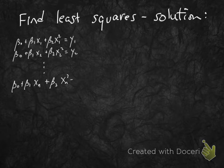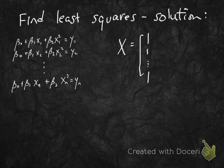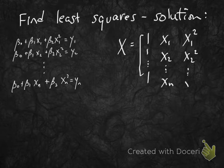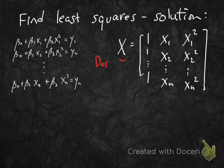Here's our ideal linear system again. The coefficient matrix is called the design matrix. Its first column is all 1s — the coefficients on the β₀ unknown. The second column is x₁, x₂, all the way up to xₙ — the x-coordinates of the data points, which are the coefficients on β₁. The third column is x₁², x₂², all the way up to xₙ² — the squares of the x-coordinates, which are the coefficients on β₂.